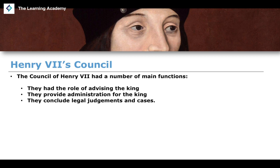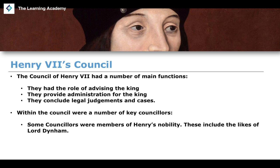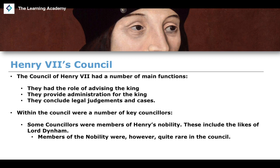The council would also conclude legal judgments and cases. There were a number of key councillors within Henry the Seventh's council. Some councillors were members of the nobility, such as Lord Daubeney, though this was increasingly rare as a result of Henry's general distrust of the nobility. Henry was often quite paranoid because of the threats to his reign and was very distrustful of the nobility.